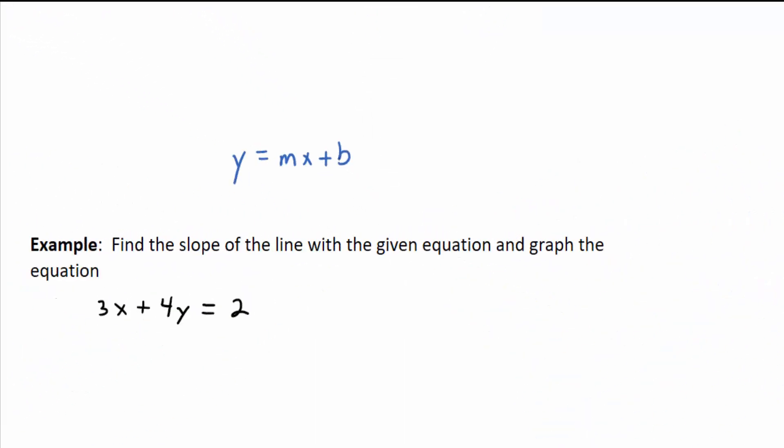So the slope-intercept form of a line, remember, is y equals mx plus b. That tells us something. It tells us when you have y by itself on one side of a linear equation, you can get the slope immediately. You just, what do you look at? If you have y by itself, what do you look at to get the slope immediately? The coefficient of x, right? But you have to have y by itself for that to work. So keep that in mind for this next example.